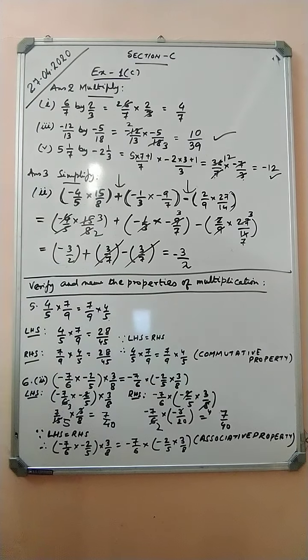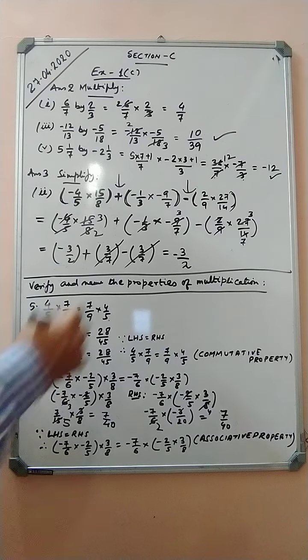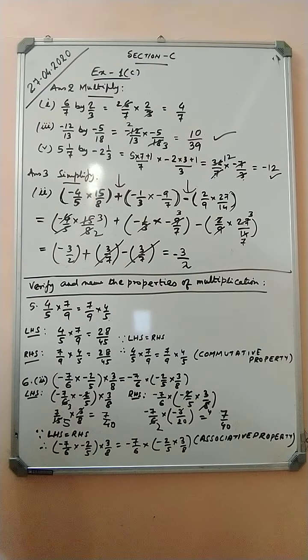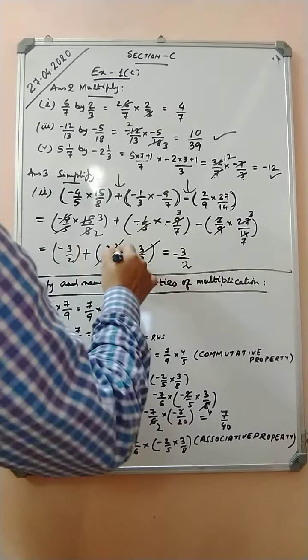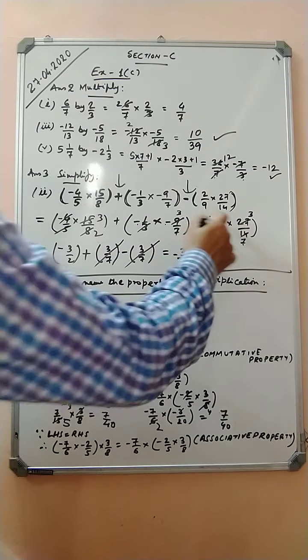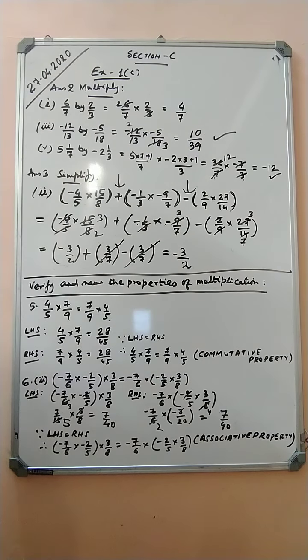Solving the first bracket: 5 and 3 cancel with 15, giving minus three by two. Solving the second bracket: 3 and 9 cancel, minus times minus is plus, giving plus three by seven. Solving the third bracket: 9 and 27, 2 and 14 cancel, giving three by seven. So plus three by seven and minus three by seven cancel, and the answer is minus three by two.